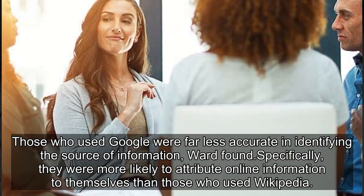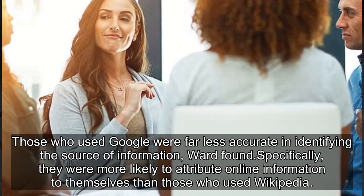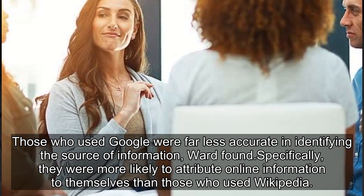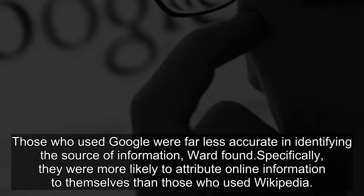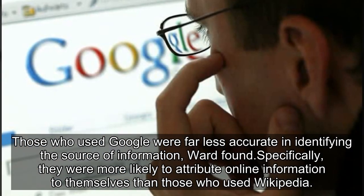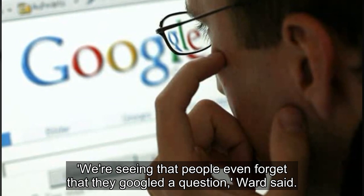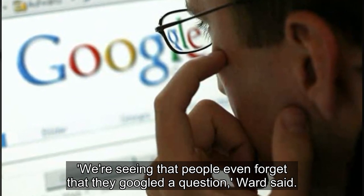Those who used Google were far less accurate in identifying the source of information, Ward found. Specifically, they were more likely to attribute online information to themselves than those who used Wikipedia. We're seeing that people even forget that they Googled a question, Ward said.